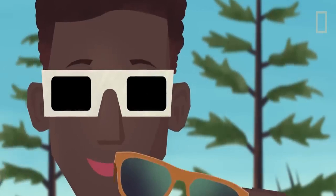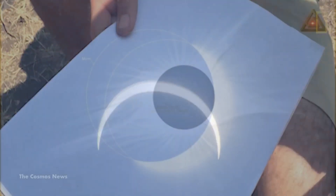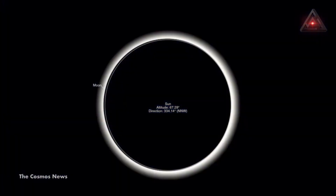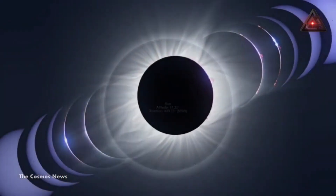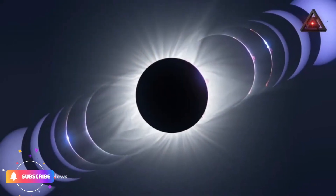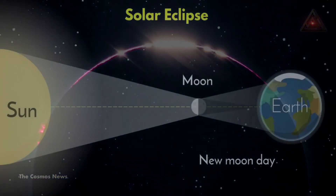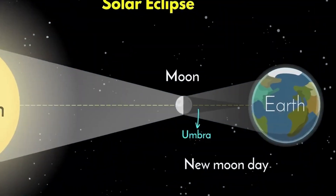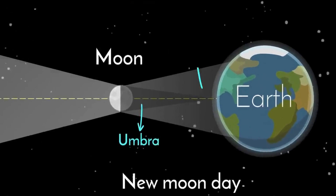So that's all about the solar eclipse and how it occurs. The recent date of solar eclipse is the 20th of April 2023. On Thursday, April 20th, the moon will block out the sun during what is known as a hybrid solar eclipse.